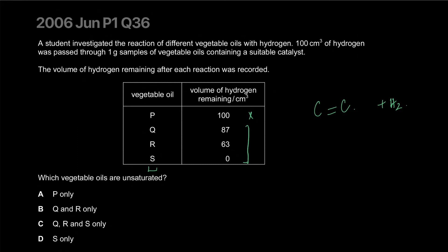Which vegetable oils are unsaturated? So unsaturated hydrocarbons have a carbon-carbon double bond and they will react with the hydrogen, so the total volume of hydrogen would decrease. So Q, R and S are all vegetable oils that are unsaturated. The correct answer is C.